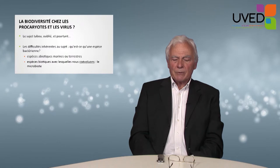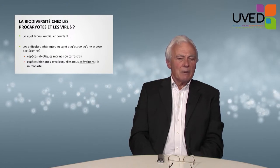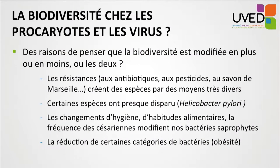The topic is not difficult merely because we have to look at bacteria under a microscope, but because there are abiotic marine or terrestrial bacteria. The biotic bacteria are the ones with which we co-evolve — us, our dogs, our cats, our species. Animal species have microbial species evolving with them. But also, the biodiversity of bacteria and viruses is much more complex than that of animals and plants.